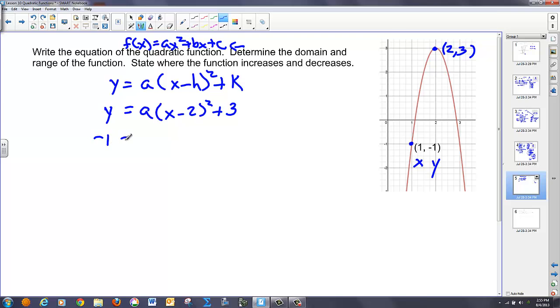y is equal to -1. a we still don't know. x is 1, minus 2 squared, plus 3. Bring the 3 over, I have -4 equals a, because (-1)² is 1, so a is equal to -4. Therefore, I have y = -4(x - 2)² + 3, which makes a lot of sense, since it opens down, the a value must be negative.